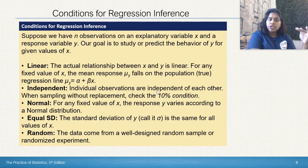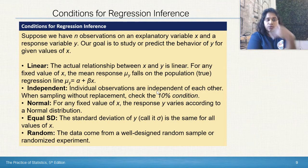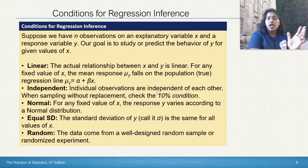Linear: the actual relationship between x and y is linear. You notice that you have a regression line. Independent: the observations are independent of each other, and if you're sampling without replacement, check the 10% condition.